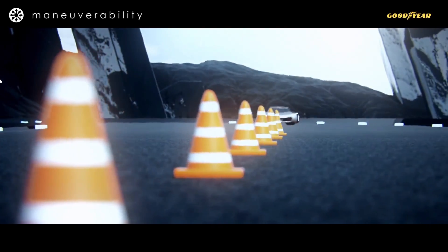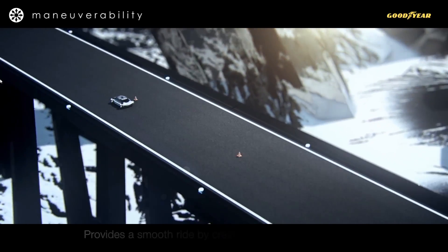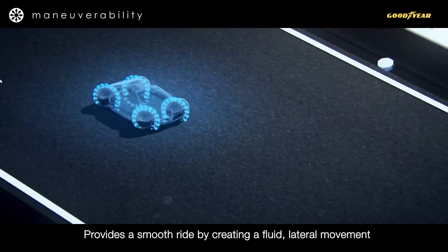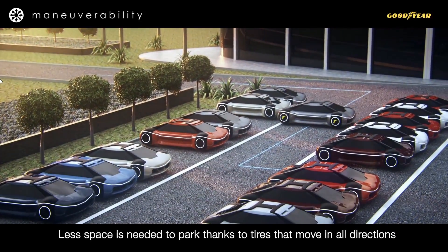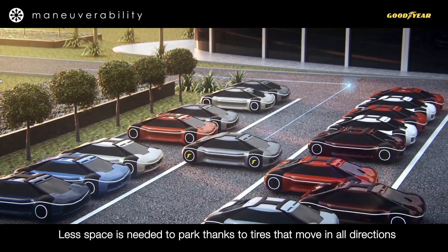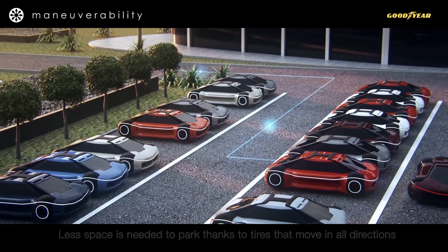Ball wheels would have several advantages such as allowing the car to move in any direction to make maneuverability easier and allowing the tires to be reoriented to spread the wear evenly over the surface. But how practical would it be to have wheels that are actually balls?